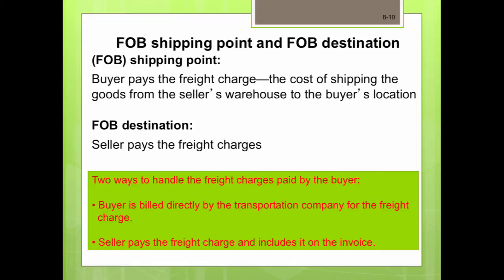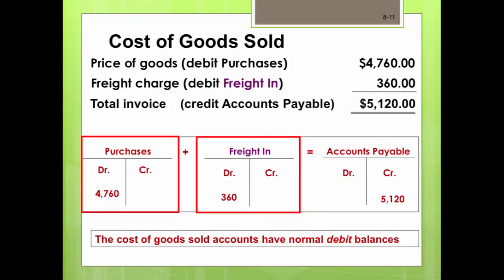There are two ways to handle freight charges paid by the buyer. First, the buyer is billed directly by the transportation company and issues a check directly to the freight company. Second, the seller pays the freight charge and includes it on the invoice, so the invoice includes the price of the goods and the freight charge. The freight in account is treated as a cost of goods sold account because it increases the cost of the merchandise purchased.